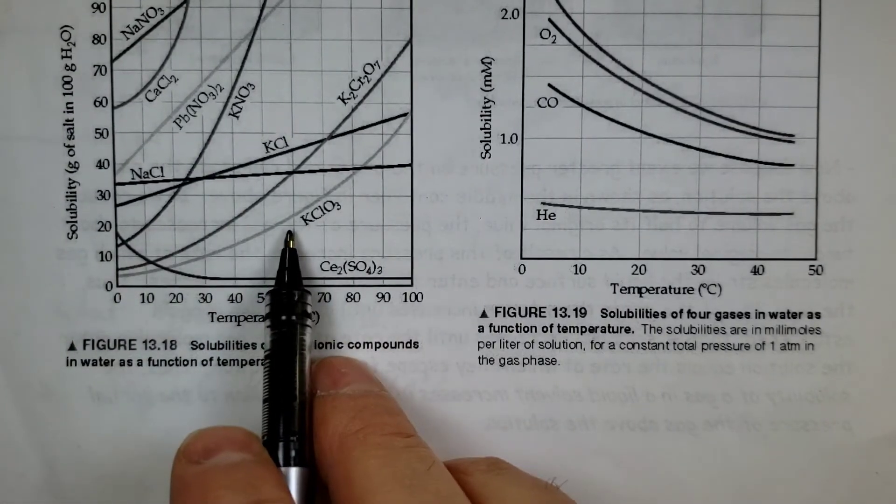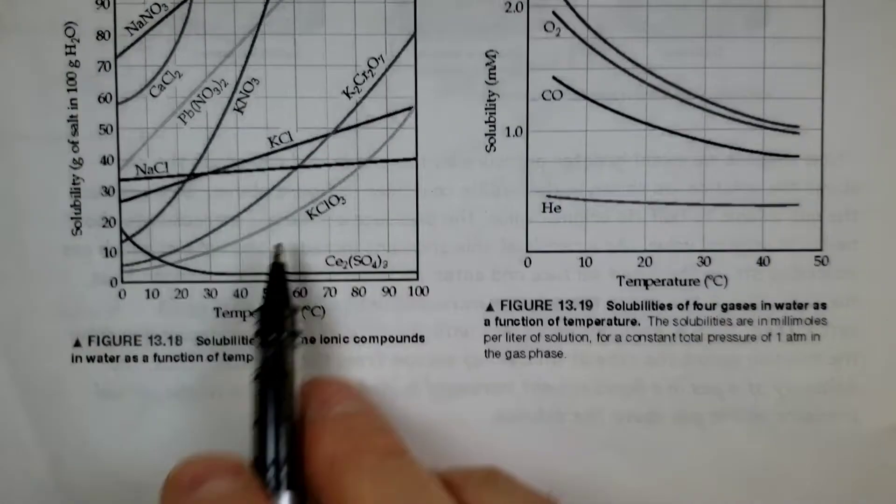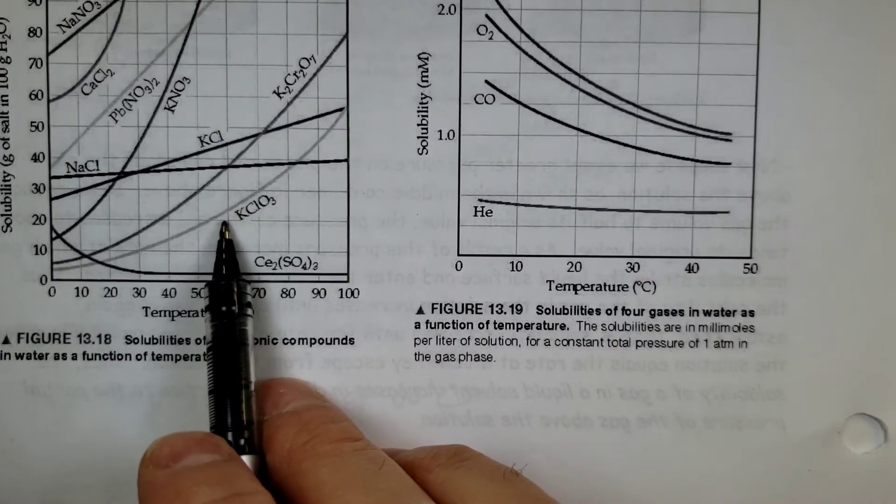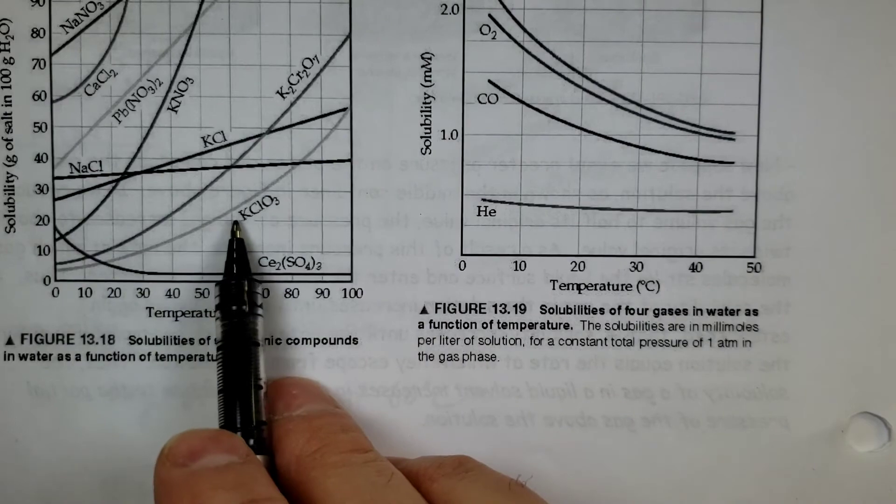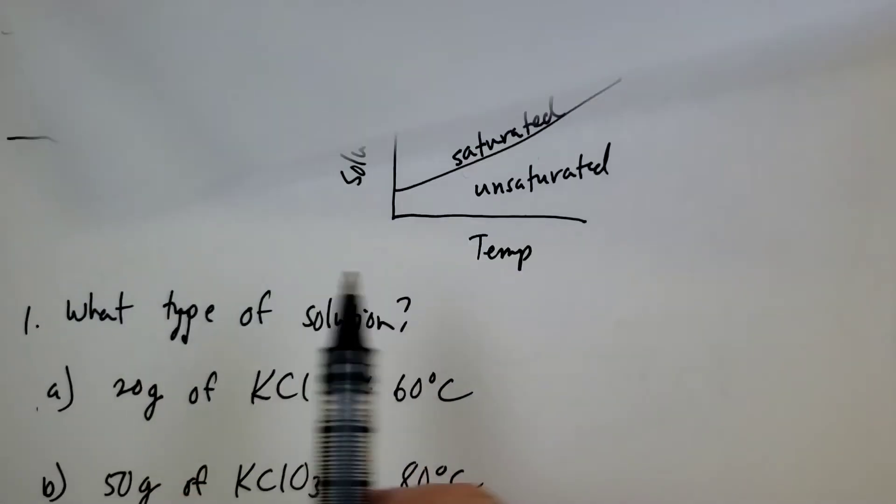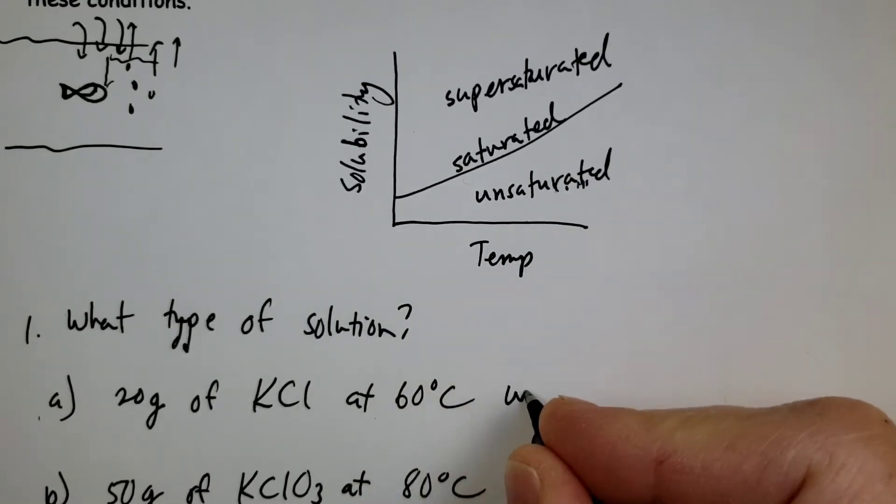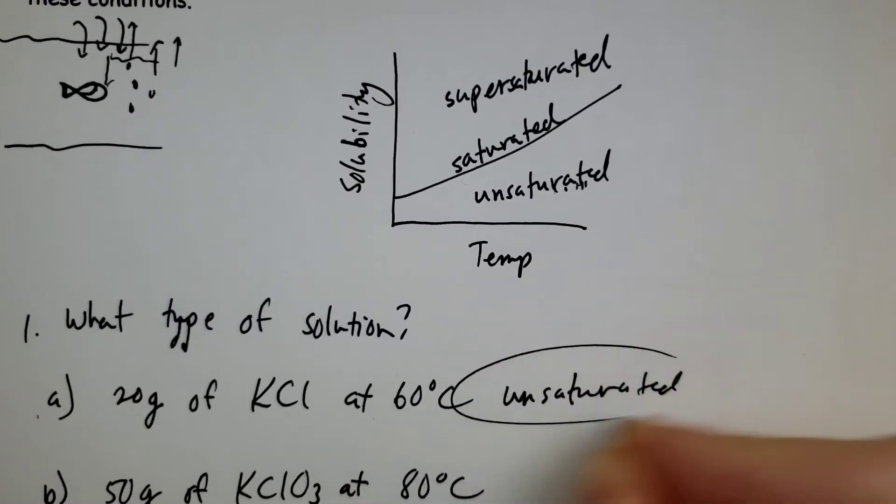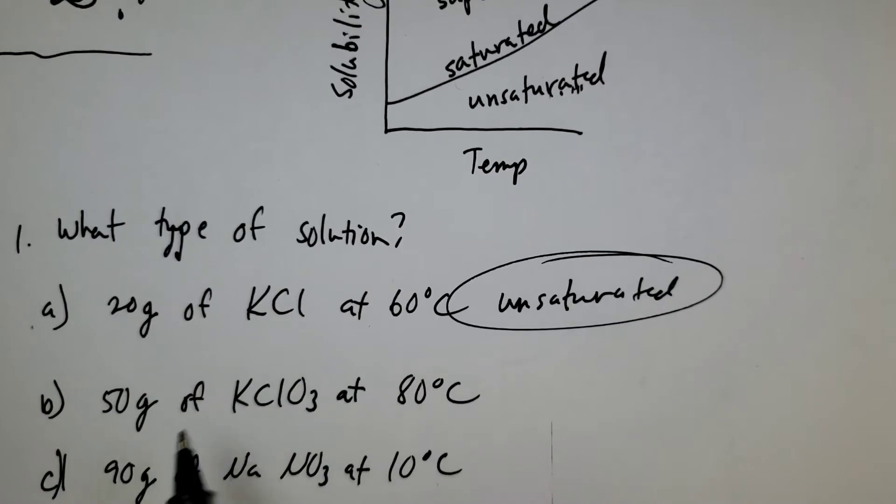So 20 grams, 60, that would be right here. Now where am I? Am I on the KCl curve? Am I below it, or am I above it? If I notice here, here's the KCl curve right here, and 20 grams at 60 falls below that curve. So I am below that curve, which means it's going to be unsaturated, because I fall below the maximum amount.